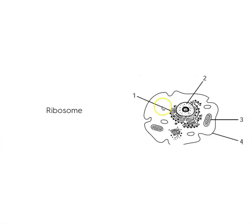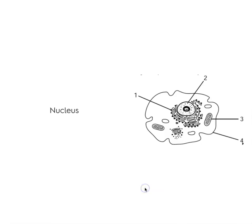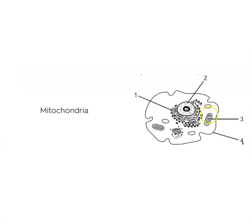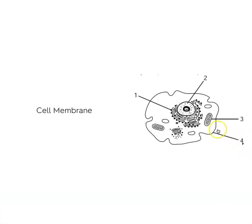Name number one: number one is pointing to the ribosome. Name number two: number two is pointing to the nucleus. Name number three: number three is pointing to the mitochondria. Name number four: number four is the outermost layer and that is the cell membrane.